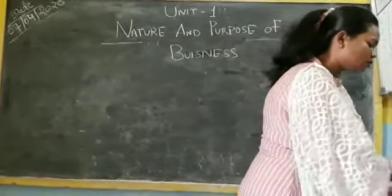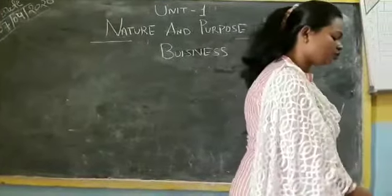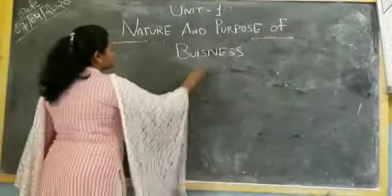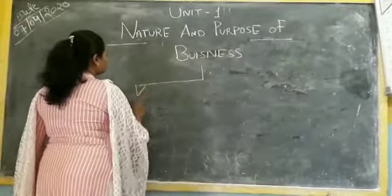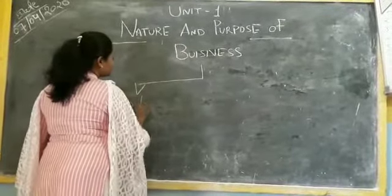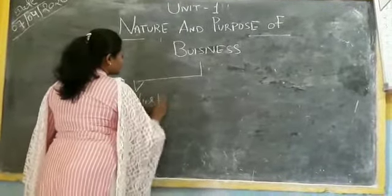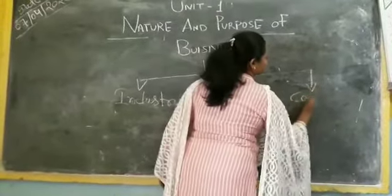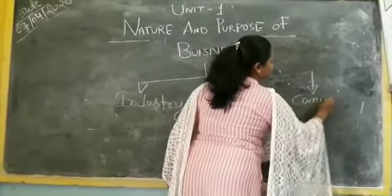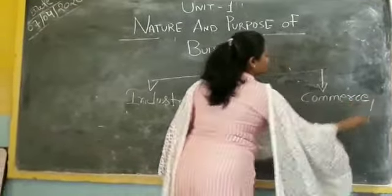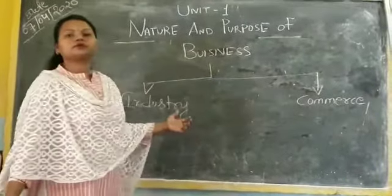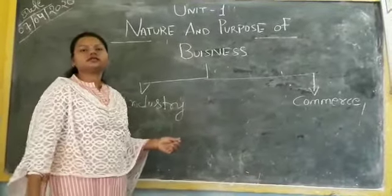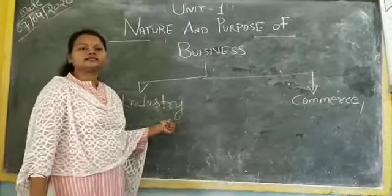Come to our next topic, classification. Classification of business is on two: first is industry and second is commerce. Industries where some production is taking place, where some manufacturing is done, is called industry.